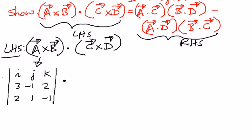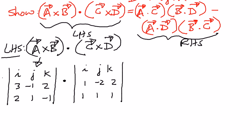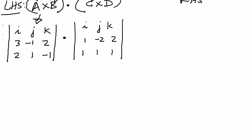We're going to dot product that by the product of vector c cross vector d. For vector c, the coefficient of i is 1, coefficient of j is negative 2, coefficient of k is 2. For vector d, the coefficient of i is 1, the coefficient of j is 1, and the coefficient of k is 1. We want to expand these and see what we get. We're going to expand along the first row for both determinants.